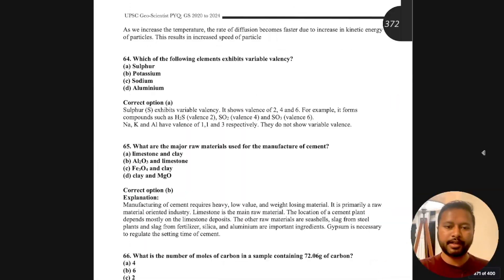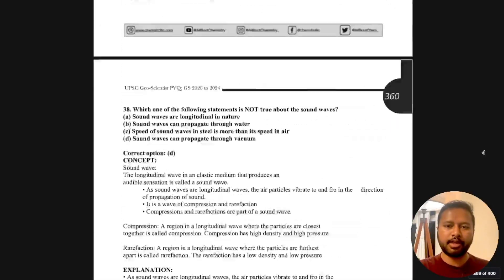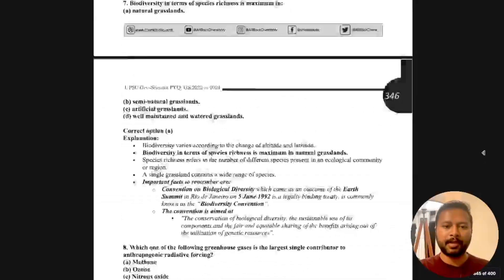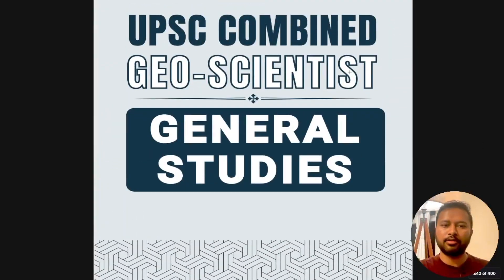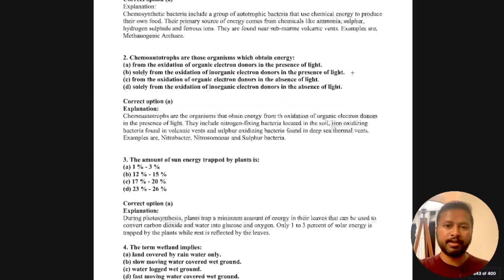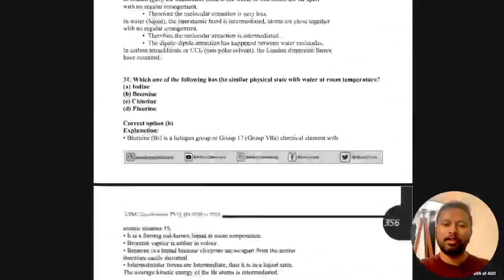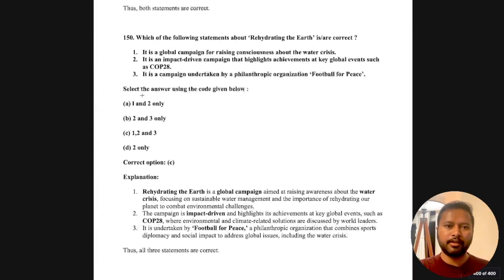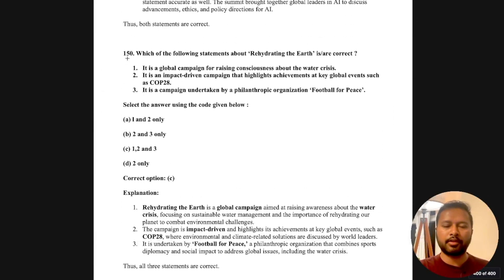We also have the general science or GS part, which is at the end of the ebook. At the end you will find the UPSC geoscientist general studies section — same pattern: question, correct answer, and explanation. This is how the ebook looks, and we have 150 questions from the GS part.